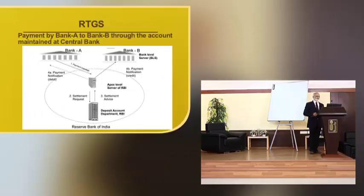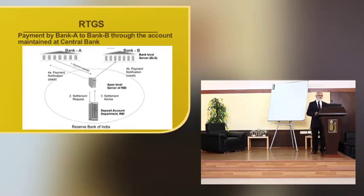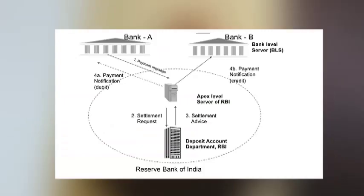The RTGS payments mechanism from Bank A to Bank B is represented this way: Bank A connects and sends a payment message to the PI system, then from there it goes to settlement request. Once cleared, it goes back to the Apex level servers of the RBI, then goes to Bank B servers, and finally payment is effected.